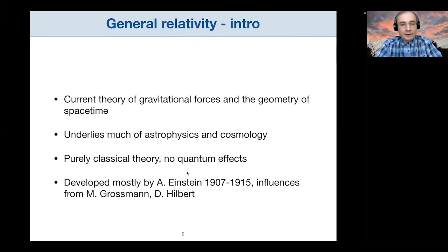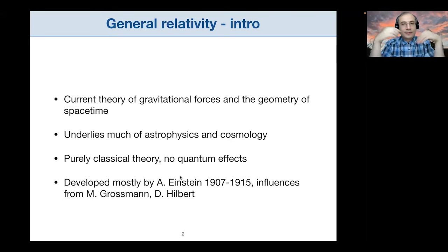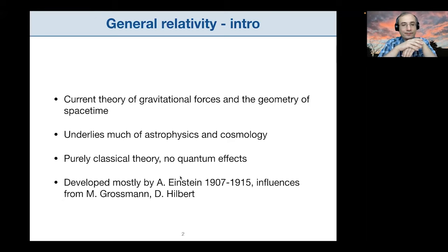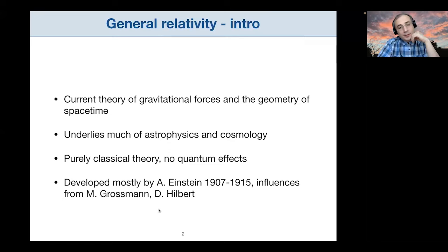Many physicists find this very frustrating and there has been a long quest in physics for finding a quantum version of general relativity. However, it hasn't been very successful so far. At the moment, GR is purely a classical theory of spacetime. It was developed mostly by Albert Einstein more than 100 years ago, although he was influenced by other people as well.